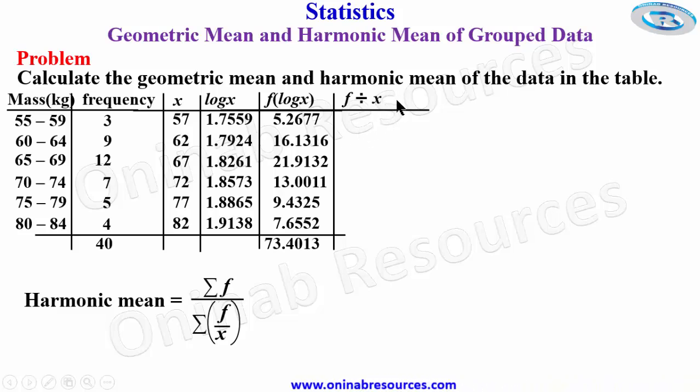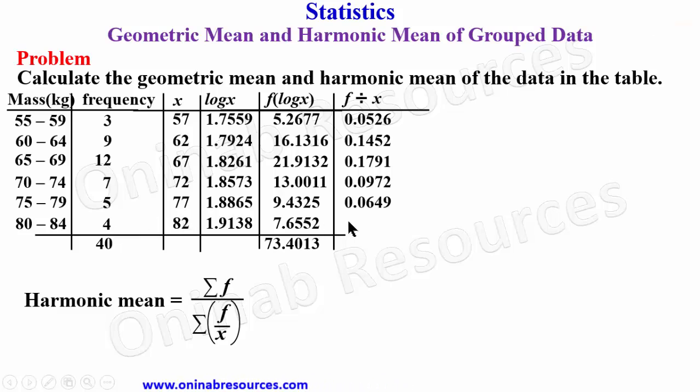So create the column for f divided by x, which means frequency divided by the mid value. 3 divided by 57 gives 0.0526. 9 divided by 62 gives 0.1452. 12 divided by 67 gives 0.1791. 7 divided by 72 gives 0.0972. 5 divided by 77 gives 0.0649. And finally 4 divided by 82 gives 0.0488. Summing it up from our calculator we have 0.5878.